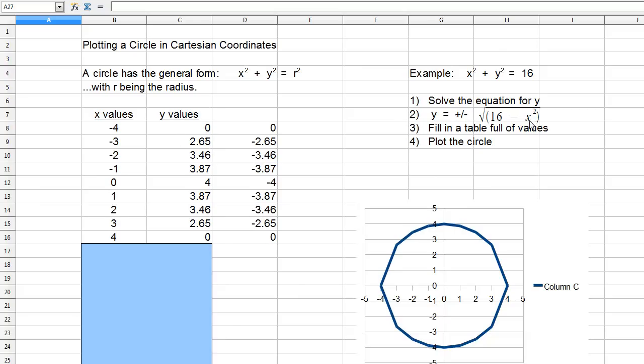If I plug in -4, I get 16, and 16 - 16 = 0, so my answer is ±0, which is just 0. Let's try -3. Plugging in -3 gives 9, so 16 - 9 = 7.